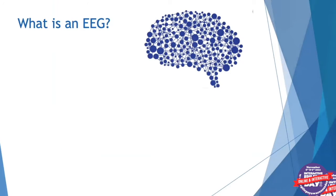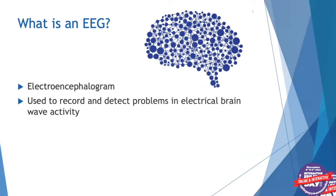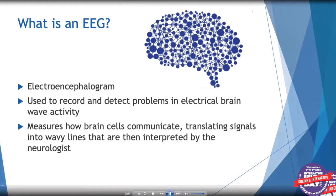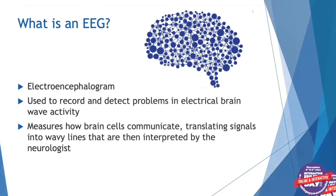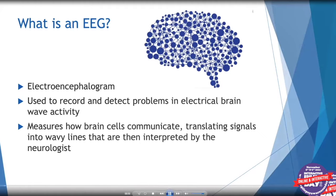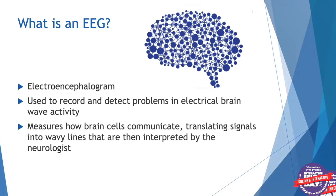What is an EEG? EEG stands for electroencephalogram, and it's a way of recording and detecting problems in electrical brainwave activity. It measures how brain cells communicate with one another, translating signals we see between cells into wavy lines that are then interpreted by the neurologist.